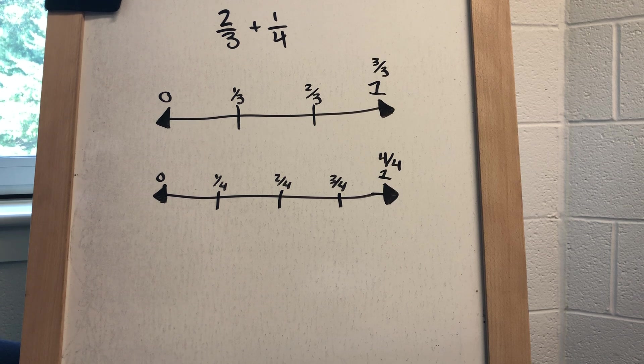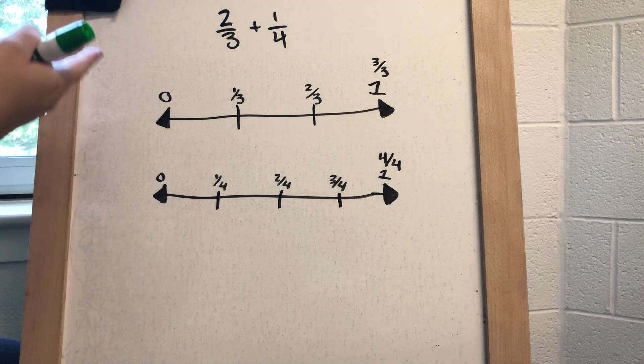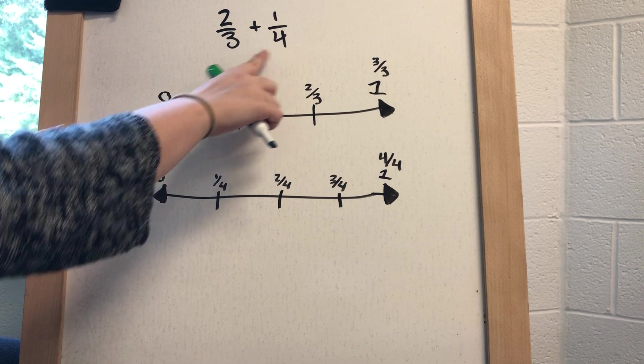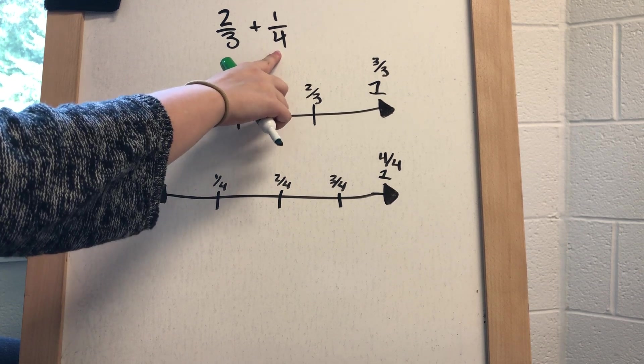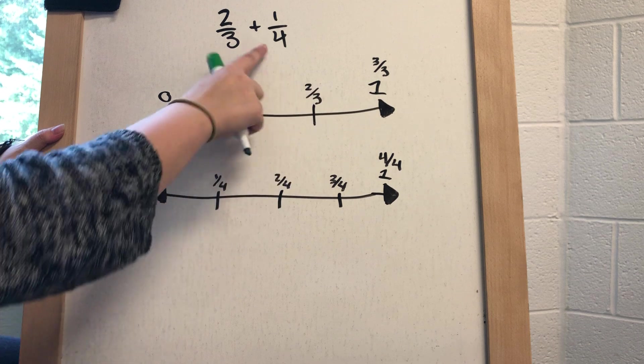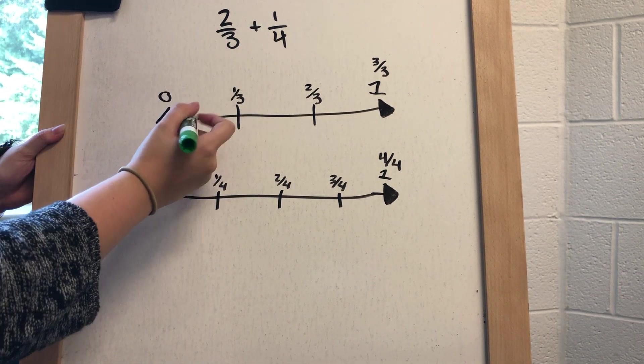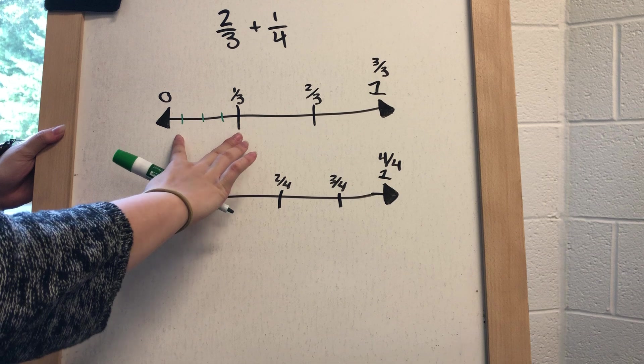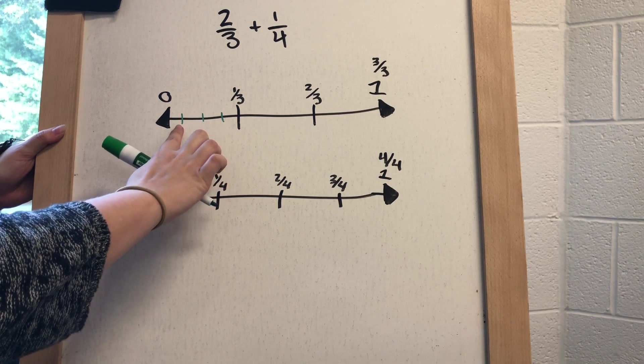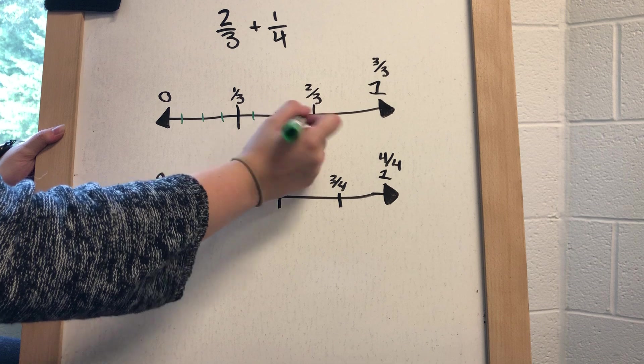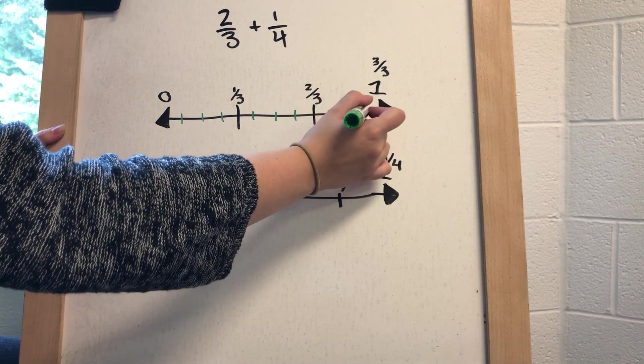My next step would be to combine these two number lines in a way. Because my other denominator is four and my first one is three, I'm going to take each of my third sections and split them into fourths. I'm just taking my section that's worth a third and I'm splitting it into fourths. I'm going to do that for every section that I have a third.